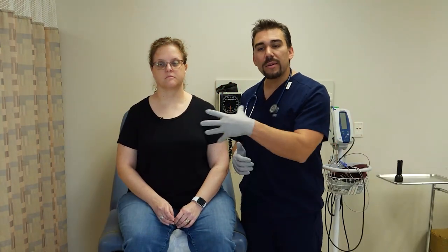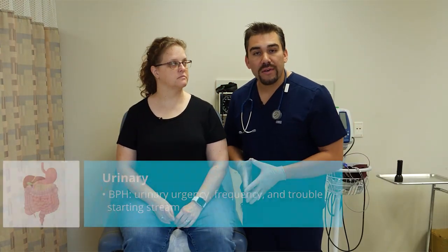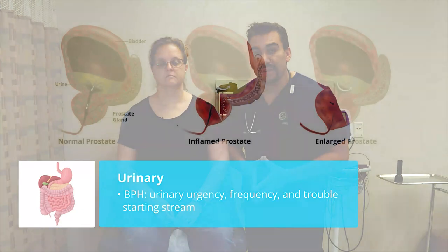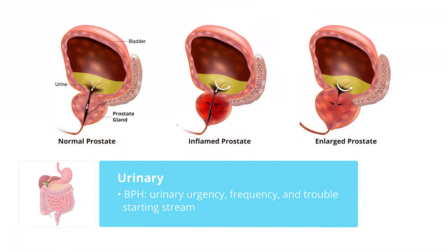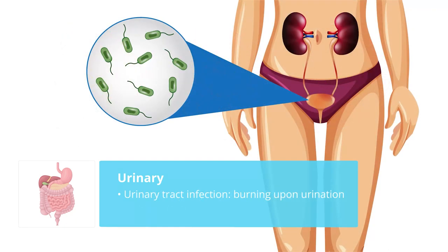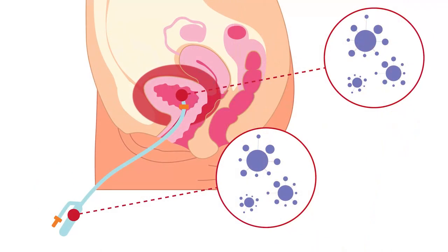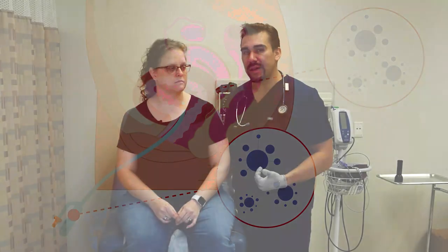Since we're in the abdominal area, a urinary assessment is also necessary. For men, we have BPH — benign prostatic hyperplasia. We see urinary urgency, frequency, and trouble starting a stream. For UTIs — urinary tract infections — we see burning upon urination. If the patient has a Foley catheter, the biggest concern is making sure the patient doesn't get a UTI, because bacteria can climb up that Foley and into the bladder.